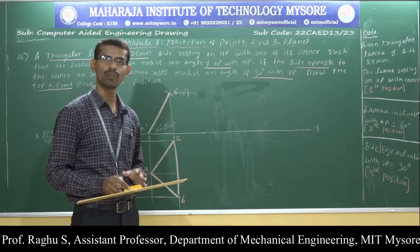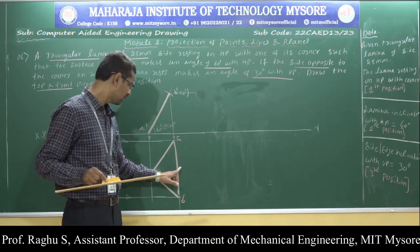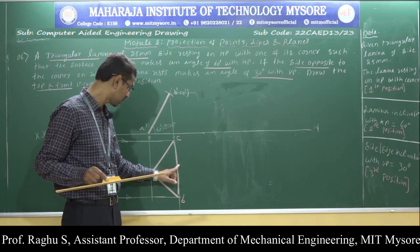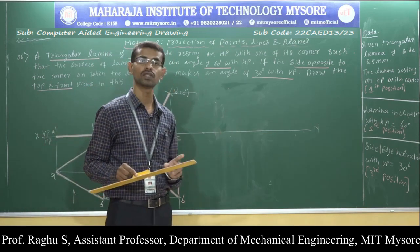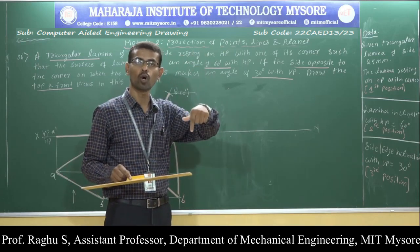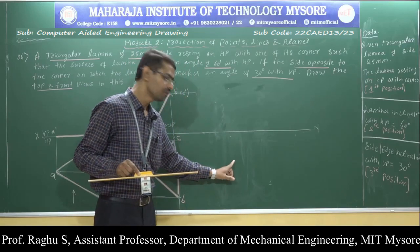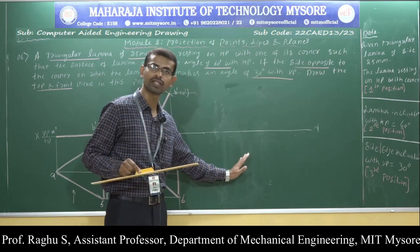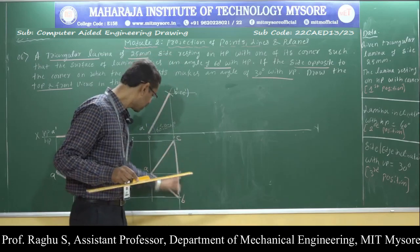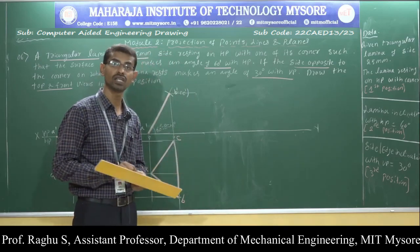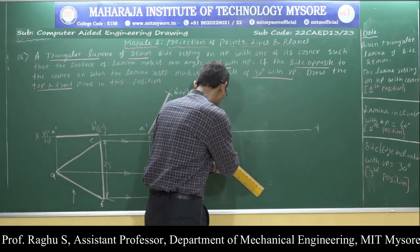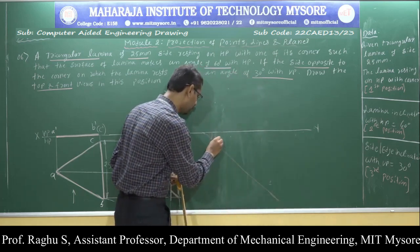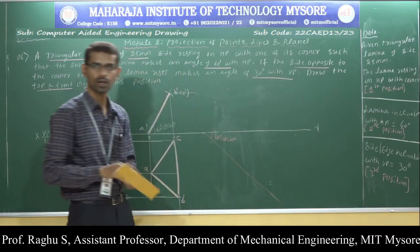To draw the last position, I need the VP inclination. The side opposite to the resting corner makes an angle of 30 degrees with respect to VP. VP inclinations are visible in the top view, which is written on the HP plane. To write the last position, draw a 30-degree line with respect to VP.